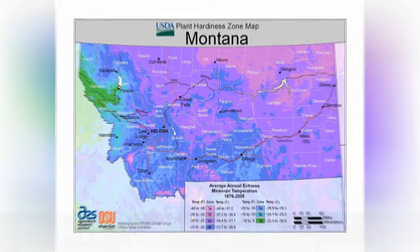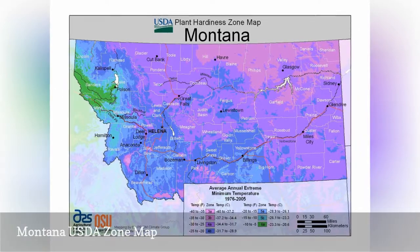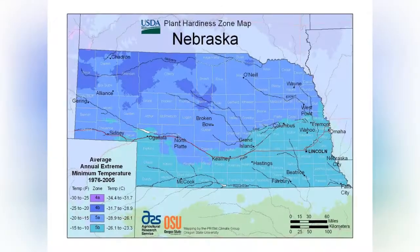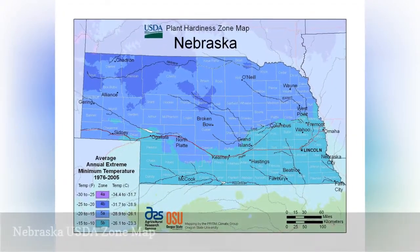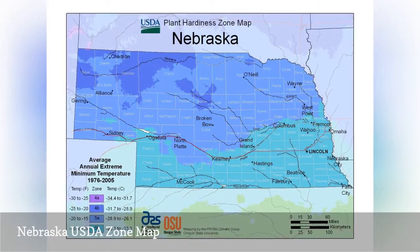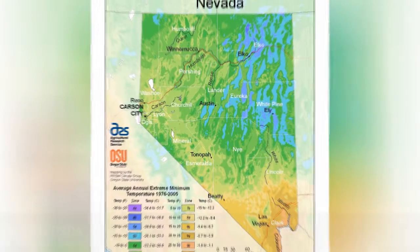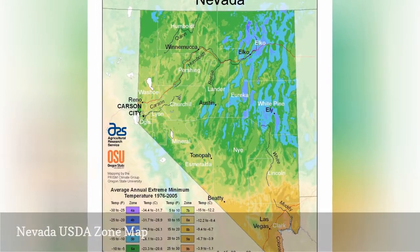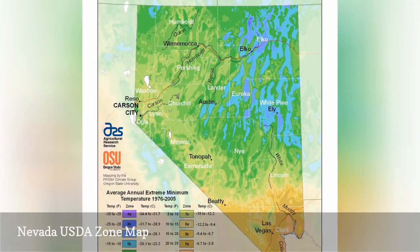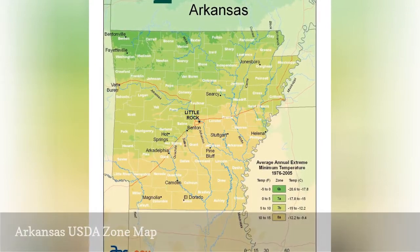USDA zones 3A through 6A are represented in Montana. USDA zones 4A through 5B are represented in Nebraska. USDA zones 4A through 10A are represented in Nevada. USDA zones 6B through 8A are represented in Arkansas.